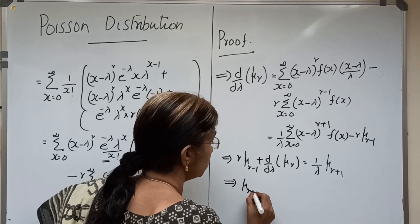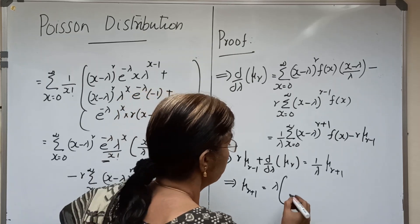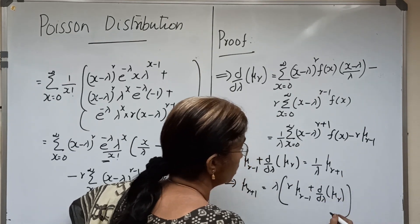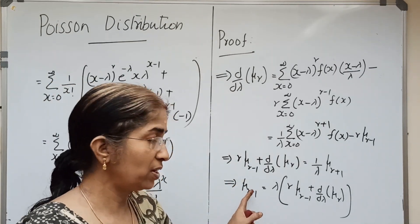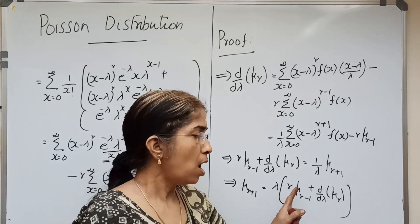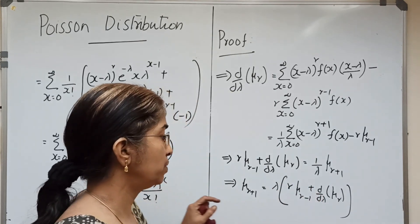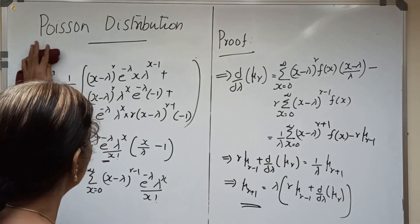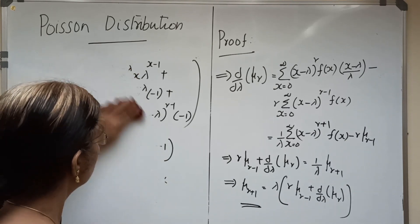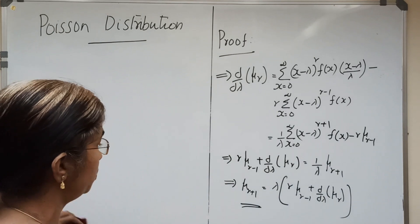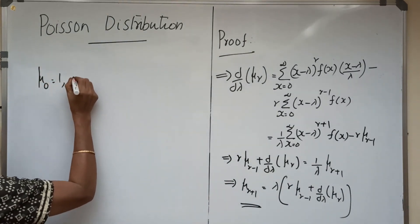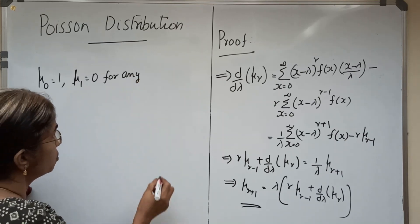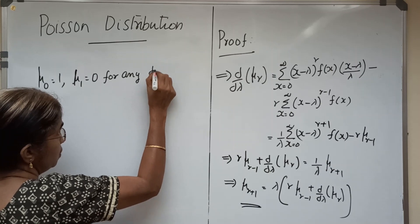Thus μ_{r+1} = λ(r·μ_{r-1} + d/dλ·μ_r). This is the recurrence relation for the central moments of Poisson distribution. We also recall the standard constants: μ_0 = 1 and μ_1 = 0 for any distribution.